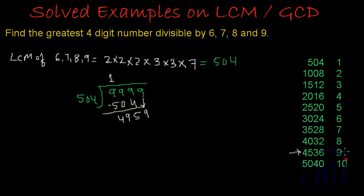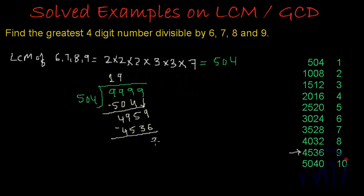The nearest possible number is 9 times of 504, so 504 and 4,959 — 9 times is 4,536. And now if I subtract: 9 minus 6 is 3, 5 minus 3 is 2, 9 minus 5 is 4. So the remainder is 423.